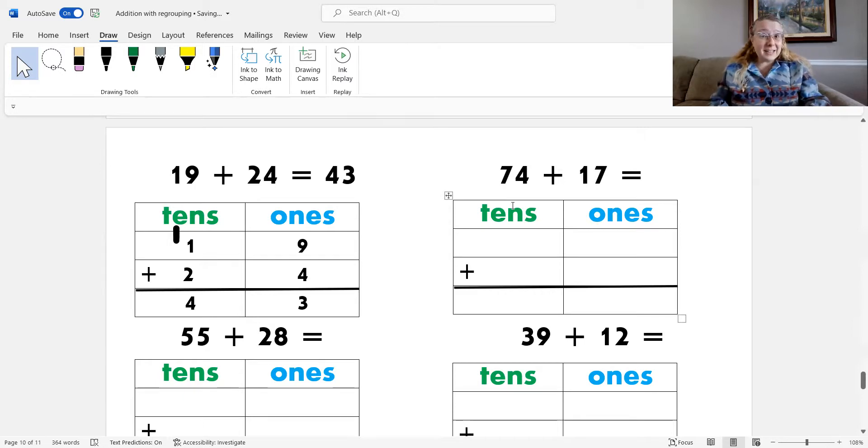What's my first step for this next problem? Yeah, I need to write it into the place value chart. 74 has 7 tens and 4 ones. And 17 has 1 ten and 7 ones. That's it. Okay, what's my next step?